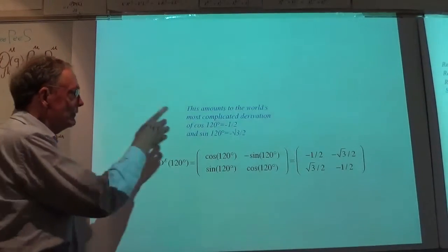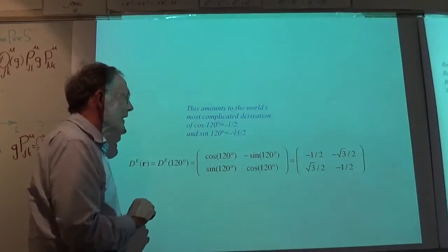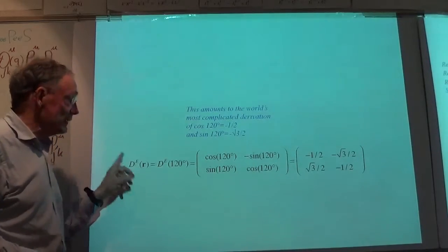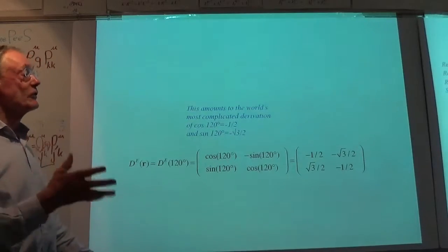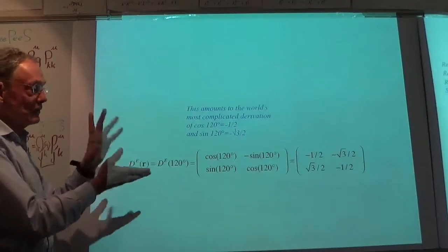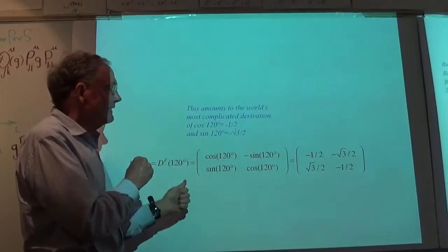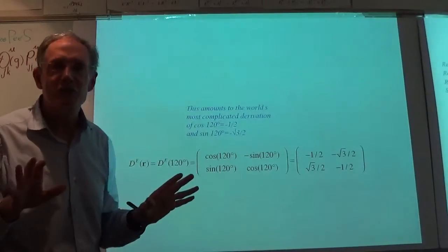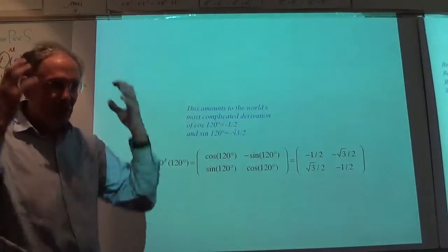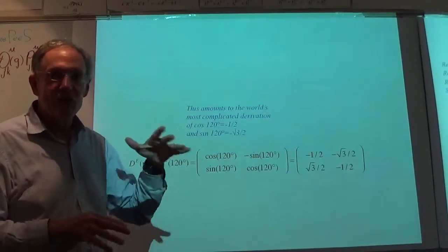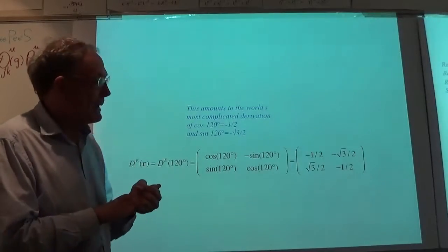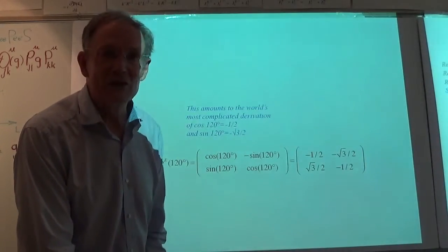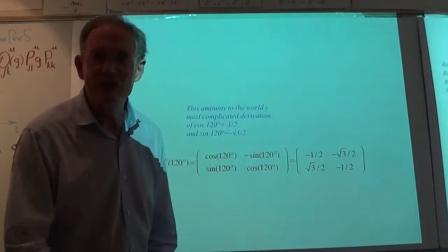Getting that plus or minus is the real rub. We have to figure out whether it's plus or minus by setting up the transformation as a matrix and looking at the result. For the 0,2 and 1,2 component, the sign was minus. This amounts to the world's most complicated derivation of cosine 120° equals minus one-half and sine 120° equals square root of 3 over 2 — that's the vector matrix E for the group D3. The sneaky way is to look at a vector or tensor and do the arithmetic.